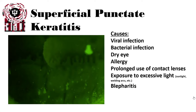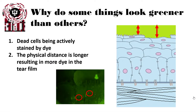SPK can be due to a wide variety of causes including viral infections, bacterial infections, dry eye, allergies, prolonged contact lens use, exposure to excessive light such as welding arcs, and blepharitis. Some spots look greener than others due to two effects: dead cells are actively stained by the dye, and the physical distance is longer, resulting in more dye in the tear film. When cells are lost, the fluorescein layer becomes thicker and appears more green.